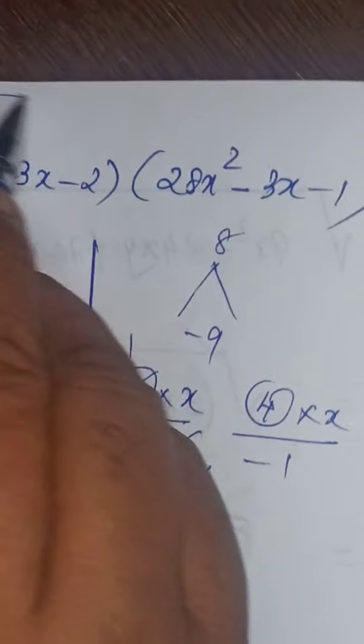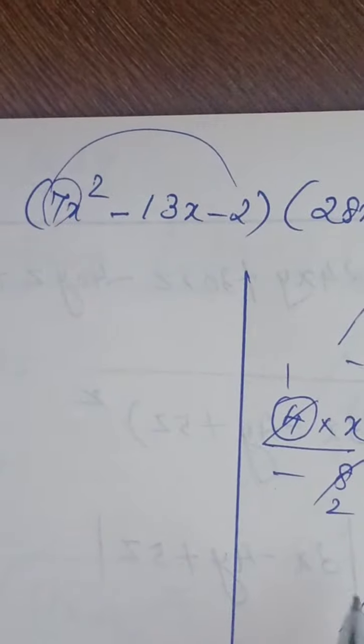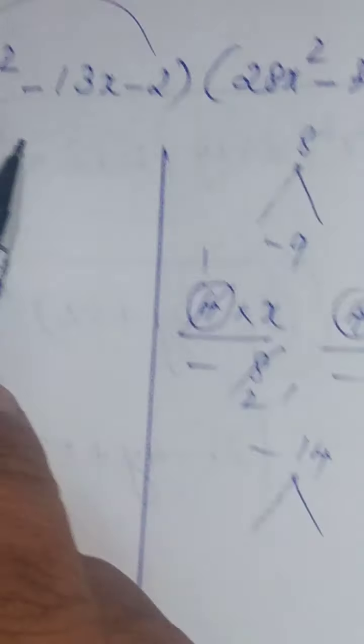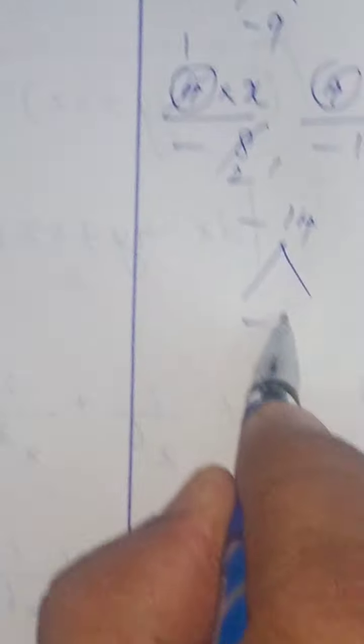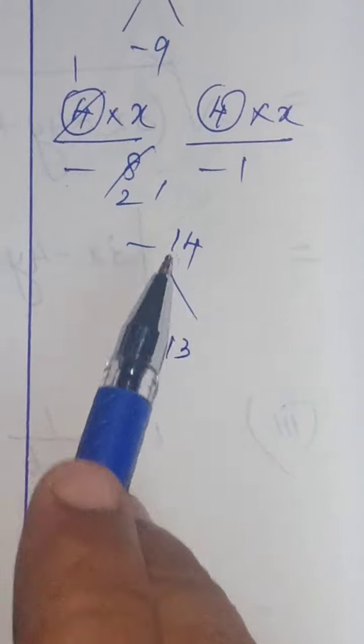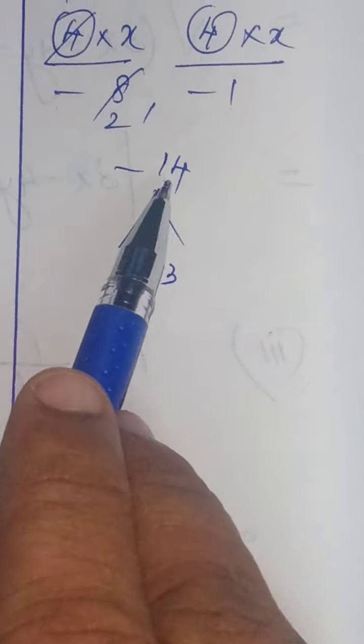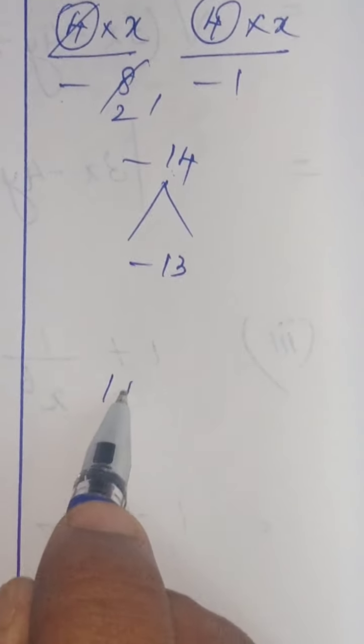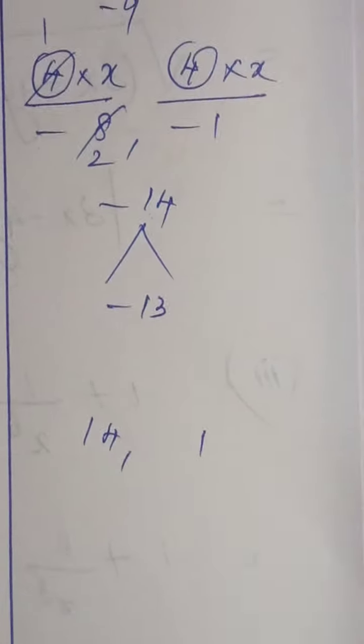Next, 7 into minus 2 minus 14. Coefficient of x equals minus 13. Product minus 14 and sum minus 13. For getting 14, you know the table 14, 1s are 14, 7, 2s are 14. But by considering 14 and 1 only, you can get 13.